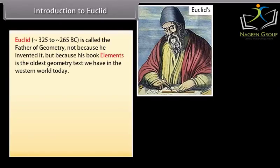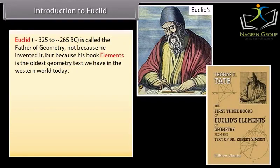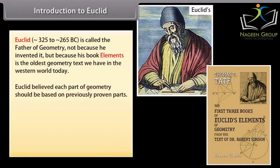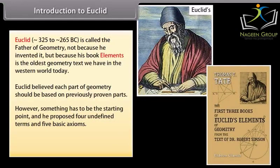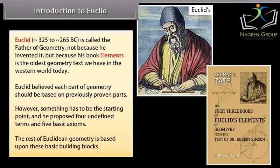Introduction to Euclid. Euclid, from approximately 325 to 265 BC, is called the father of geometry not because he invented it, but because his book Elements is the oldest geometry text we have in the Western world today. Euclid believed each part of geometry should be based on previously proven parts. However, something has to be the starting point, and he proposed four undefined terms and five basic axioms. The rest of Euclidean geometry is based upon these basic building blocks.